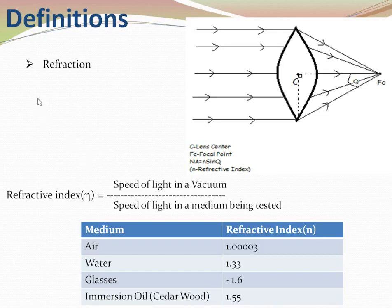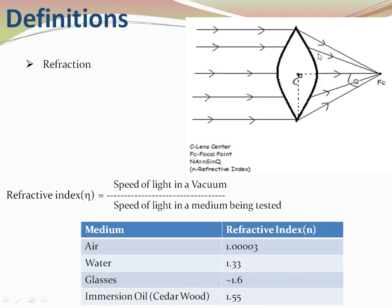Refraction is when parallel rays of light pass from one medium to another and change the direction of their travel. As shown in the figure, light is traveling in a straight line, but after passing through the convex lens, the rays change their direction. This change in direction is known as refraction — it may converge or it may diverge.